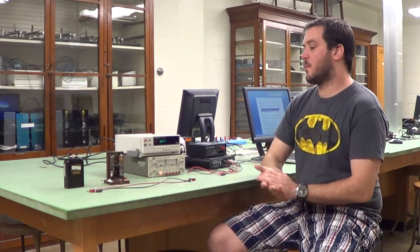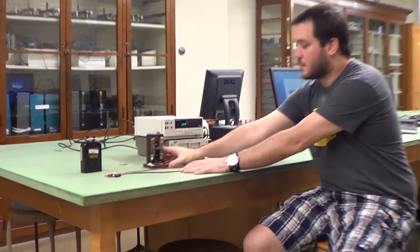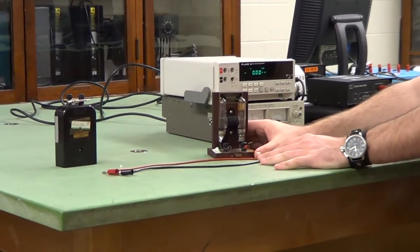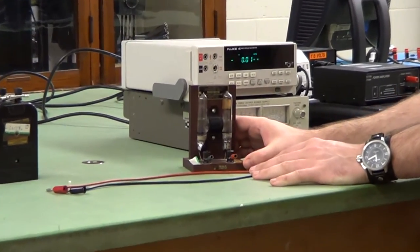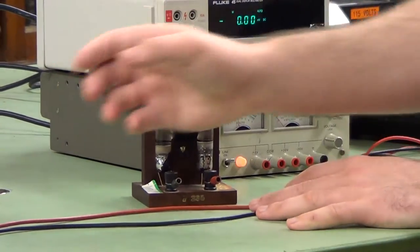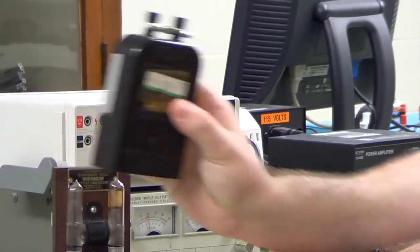To start this lab off, we're going to measure the voltage produced by a standard cell. Some of the standard cells look kind of funky because they're really super old, and others, most of them actually, look more like this one right here.